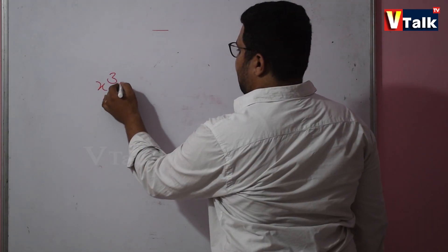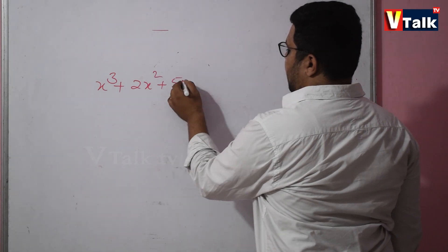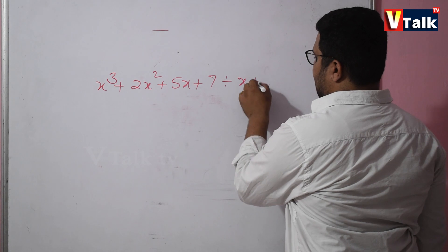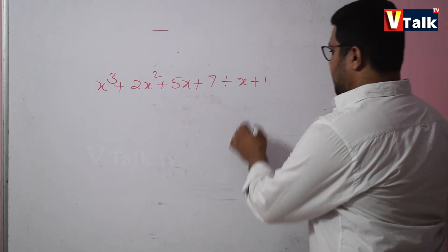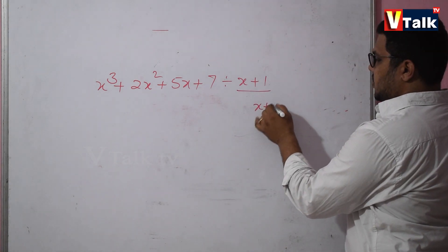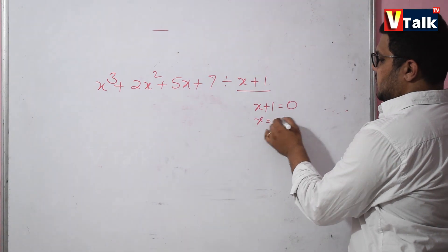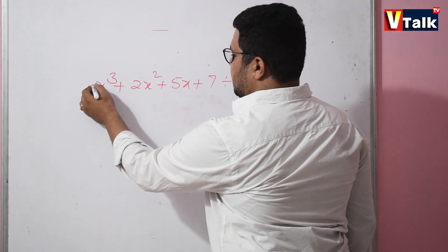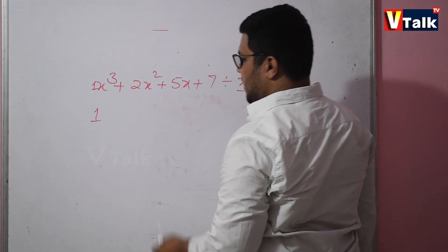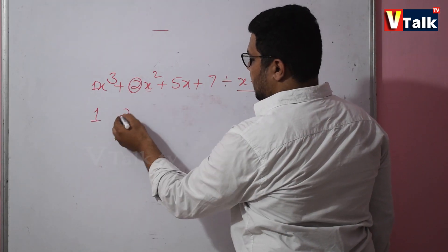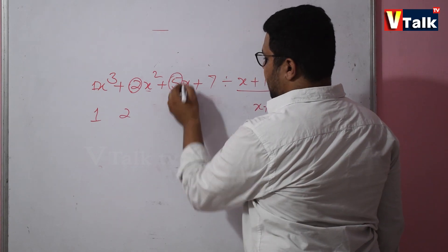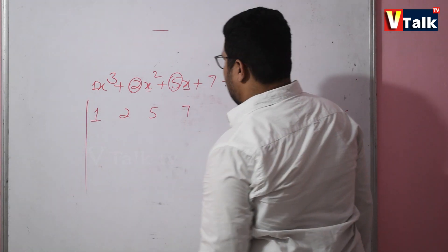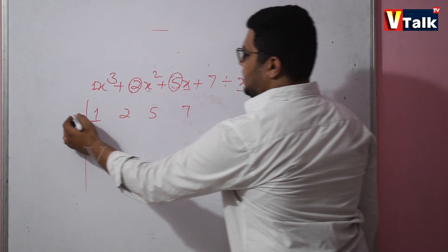x cubed plus 2x squared plus 5x plus 7 divided by x plus 1. Setting x plus 1 equal to 0 gives x equals minus 1. Now write the coefficients: x cubed is 1, x squared is 2, x is 5, and the constant is 7. Here we have minus 1.